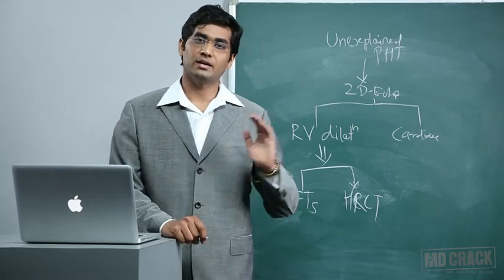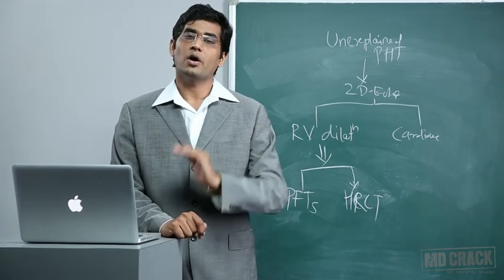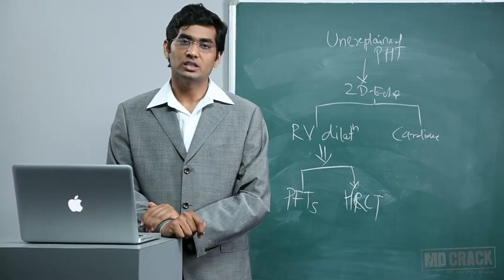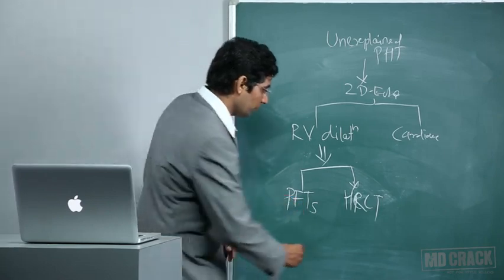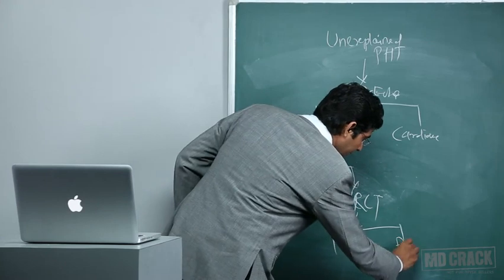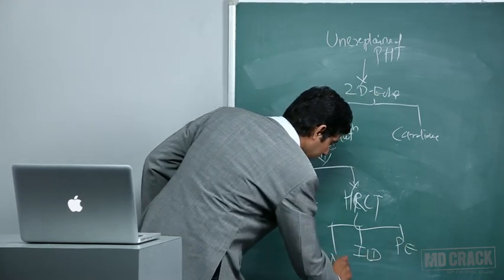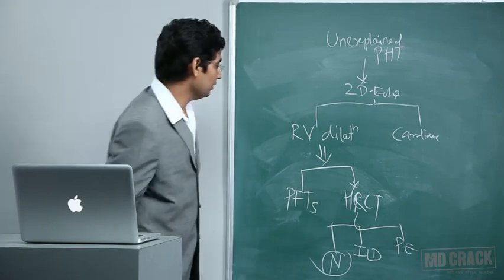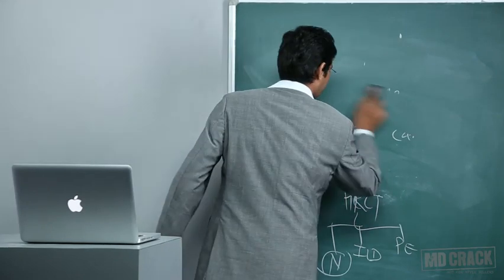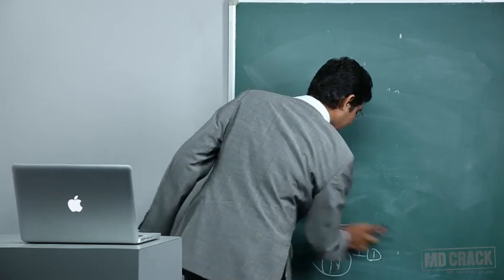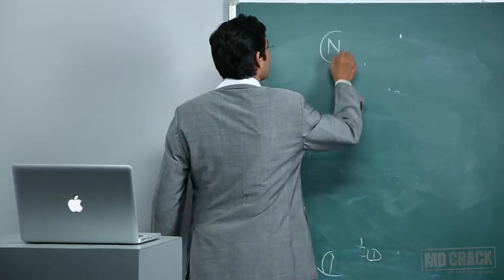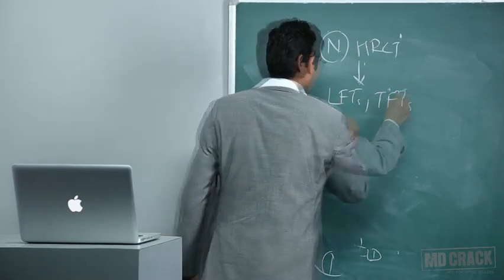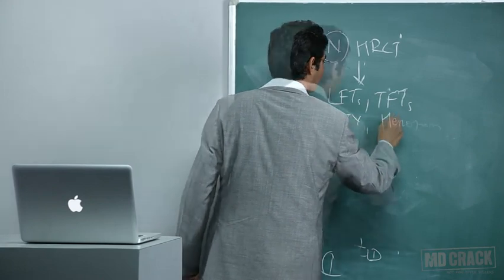For suspected restrictive disease, HRCT is needed. HRCT can diagnose ILD, chronic thromboembolic conditions, or may come out normal. So from HRCT, there are three possible outcomes: chronic thromboembolic disease, ILD, or a normal HRCT result.